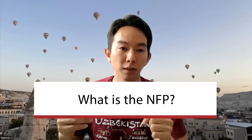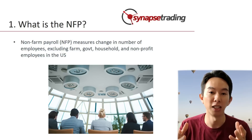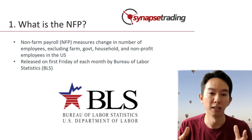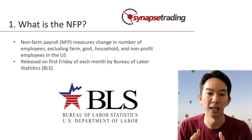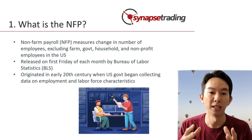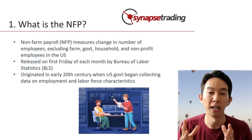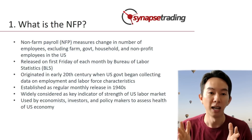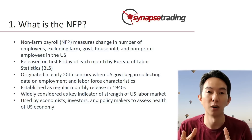What is the NFP and its origin? The non-farm payroll is a measure of the change in the number of employees excluding farm employees, government employees, private household employees, and employees of non-profit organizations in the US during the previous month. It is widely considered a key indicator of strength of the US labor market and is released by the Bureau of Labor Statistics, or BLS, on the first Friday of each month. The NFP report has its origin in the early 20th century when the US government started collecting data on employment and labor force characteristics. It was established as a regular monthly release in the 1940s and has since become an important economic indicator used by economists, investors, and policymakers to assess the health of the US economy.